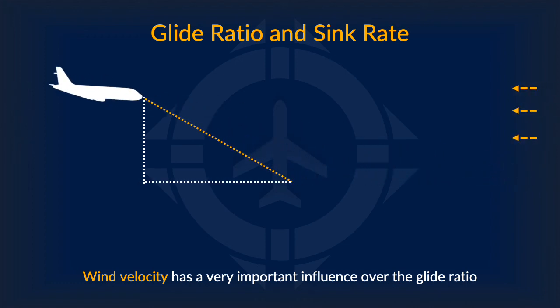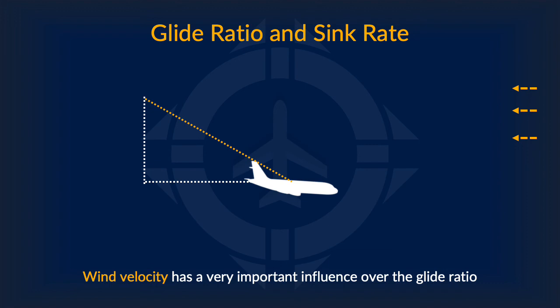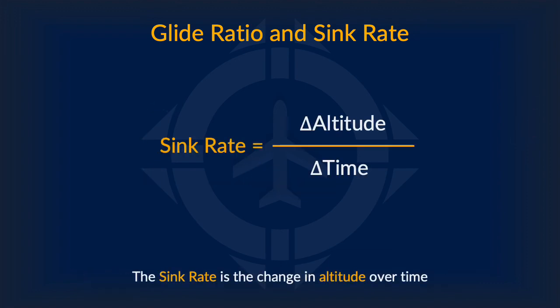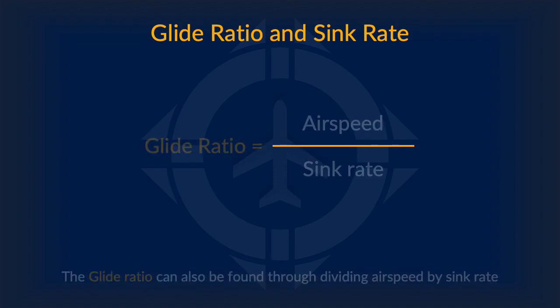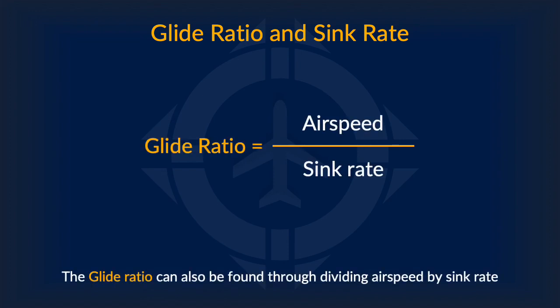Meanwhile, headwind greatly decreases your glide ratio because it decreases your speed. On the other hand, sink rate is the change of altitude over time. A high sink rate means your altitude is changing very quickly, while a low one means your altitude is changing slowly. You can also get the glide ratio by dividing airspeed by the sink rate.